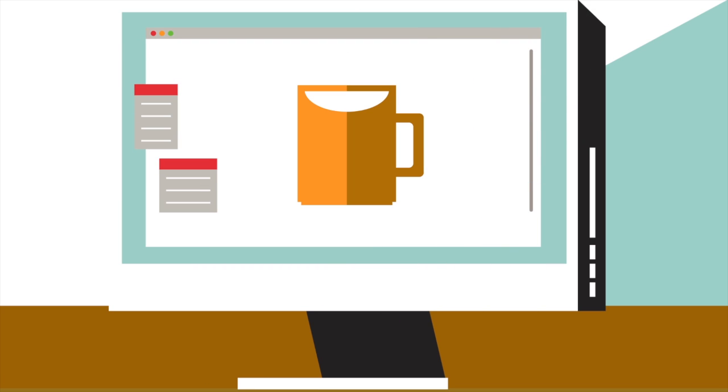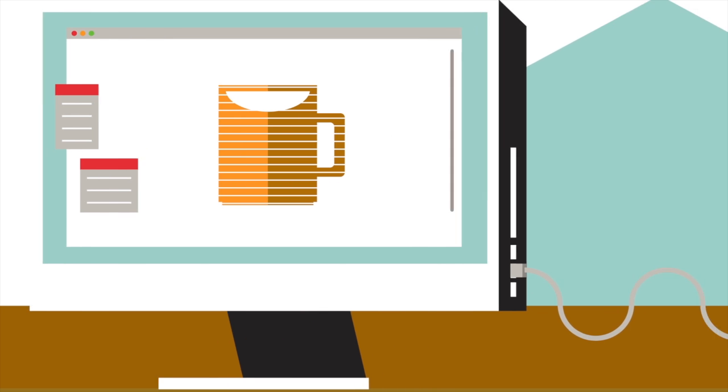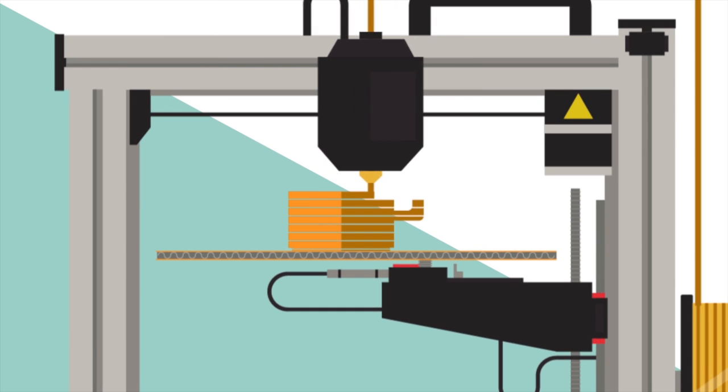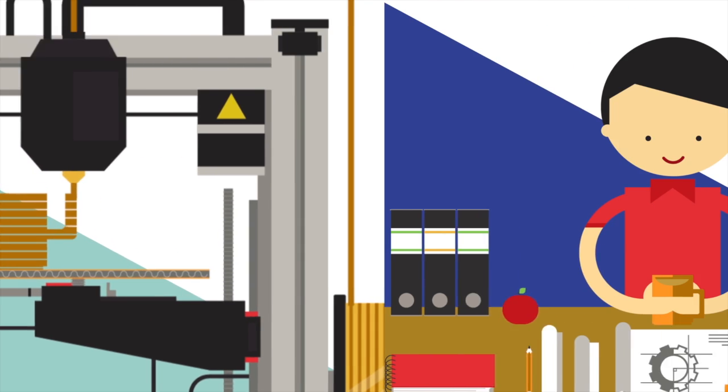How does it work? First, a design is created. The software makes printable layers. The 3D printer then melts the material and stacks the layers on top of one another. All ready to use.